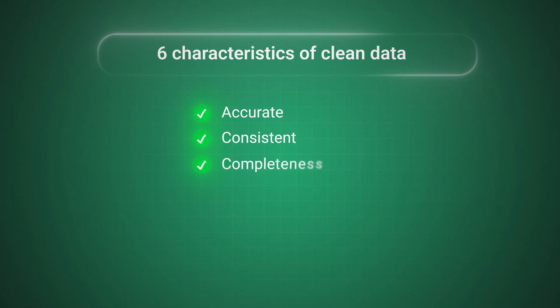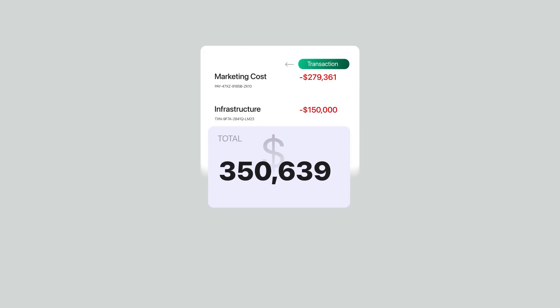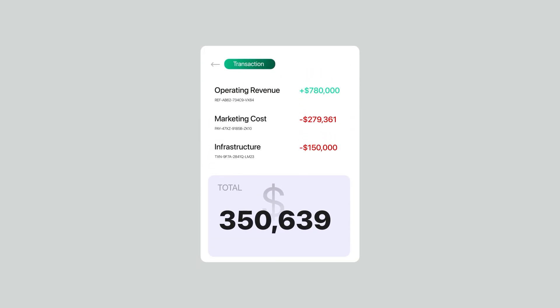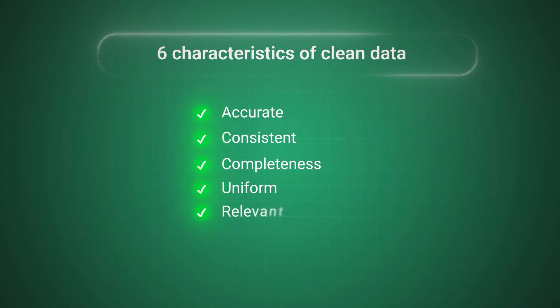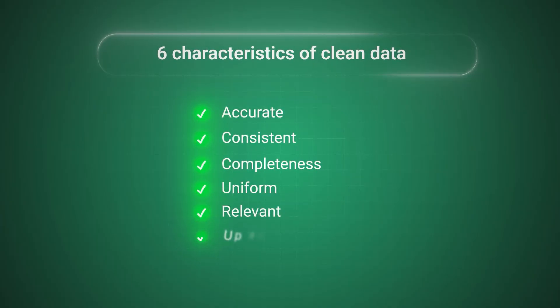Third, completeness — all the necessary data points need to be present and available. This sounds obvious, but it's trickier than you think, because in FP&A we usually work with aggregate data — the sum of all transactions for an account, not individual transactions — so you might not notice if something is missing. Fourth, your data needs to be uniform — consistent formats for things like dates and currencies. Fifth, it needs to be relevant — only include data that actually influences the decision you're analyzing. Sixth, it needs to be up to date and reflect current information.